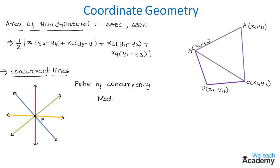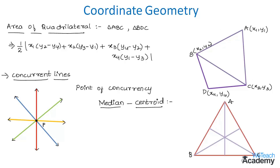Now let us discuss medians and centroid. In triangle ABC, the line segment joining a vertex to the midpoint D of the opposite side BC means AD is called the median of triangle ABC. Similarly, we have midpoints E and F. The medians of a triangle are concurrent, having only one common point, denoted by G, which is named the centroid of the triangle. The centroid G divides the median in the ratio 2 : 1 internally.